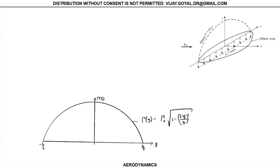We're going to go ahead and assume a perfect elliptic wing. We can assume that this is the equation by which it is governed. You can see that if I knew what the value of gamma sub zero was, I can know my full distribution because y depends on the location of y and b is the total span of my wing. This is my wing span b.